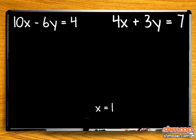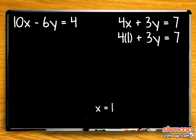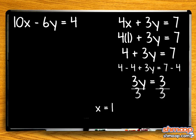Now we'll just plug 1 back into the top equation. 4 times 1 equals 4, plus 3y equals 7. Subtract 4 from both sides, and we see that 3y equals 3. Divide both sides by 3, and y equals 1.